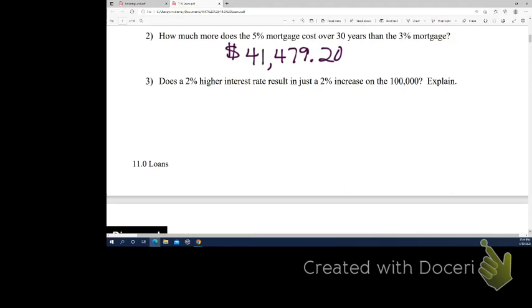So, that was a 2% higher interest rate. Did that result in a 2% increase on the $100,000? Okay. So, what would 2% of $100,000 be? 2,000. 2,000, right? Because 2% of 100 is 2. So, 2% of 100,000 would be 2,000. So, was it only 2,000 more? No. No, no.